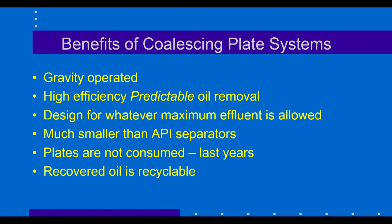The benefits of coalescing plate systems: they're gravity operated and have high efficiency and predictable oil removal. We can design for whatever maximum effluent is required. Here in the U.S., the requirement is usually 15 milligrams per liter or less, which meets the requirements of the Clean Water Act. Some facilities require 10 milligrams per liter or less, and we can do that as well. The plates are not consumed — they last for years. We recently replaced some installed in 1985, so about 30 years, and many have been replaced at 17 to 20 years.